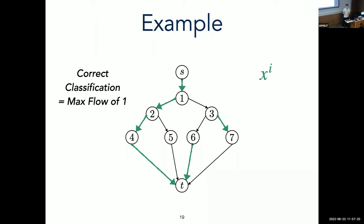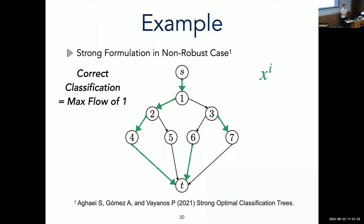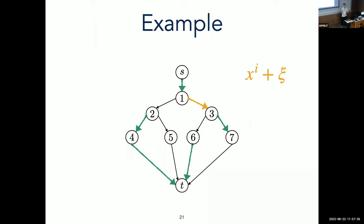And so this idea has already been used in the non-robust tree case in Bertsimas, Dunn, and others' papers. But of course, in our setting, we have this issue where we have this distribution shift that may shift how your data sample flows down the tree, and which may lead to an incorrect classification.